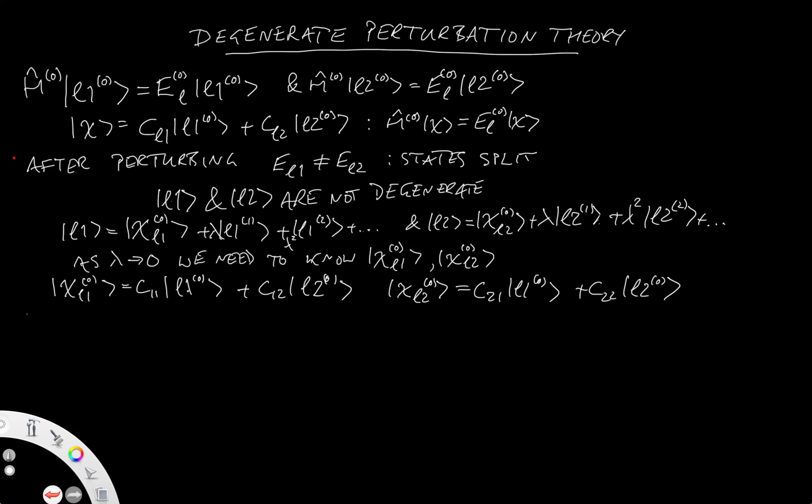Now, if you think about the first order perturbation theory, which I'll write as F-O-P-T equation, then what you would see at this stage would be H hat of 0 minus E_L0, acting on psi_L_mu_1, and mu just stands for 1 or 2, and that's going to be equal to E_L_mu_1 minus H prime.